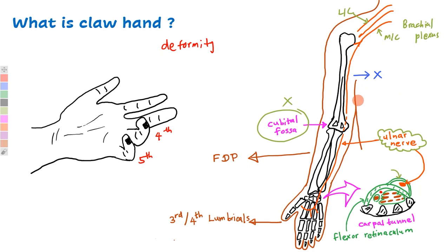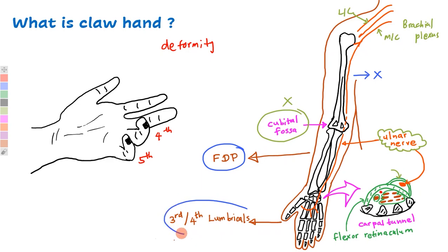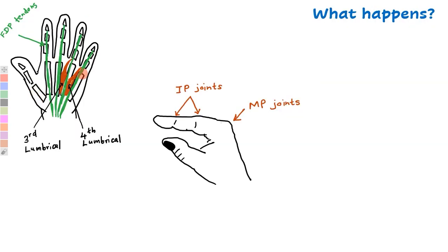At the arm, the ulnar nerve does not supply any muscles. At the forearm, it supplies two muscles: the flexor carpi ulnaris muscle and the medial half of the flexor digitorum profundus muscle. At the hand, it supplies many intrinsic muscles, including the third and fourth lumbricals.